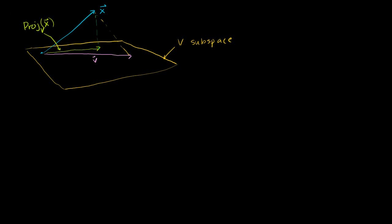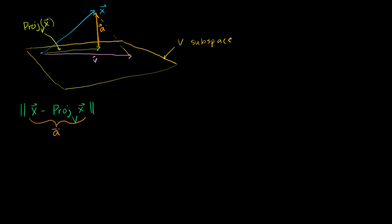What I want to prove is that the distance between x and its projection onto the subspace — the length of the vector x minus the projection of x onto my subspace — is less than any other distance. So x minus the projection of x onto V is going to be this vector right there. We could call that vector a. It's clearly in the orthogonal complement of V, because it's orthogonal to the subspace — that's the definition of a projection. So this is equal to a.